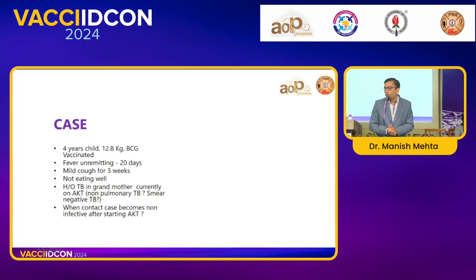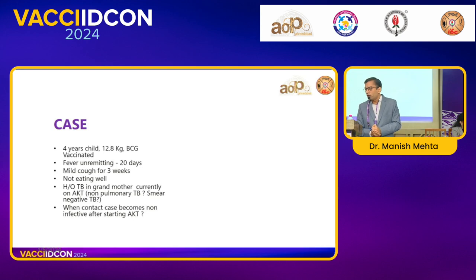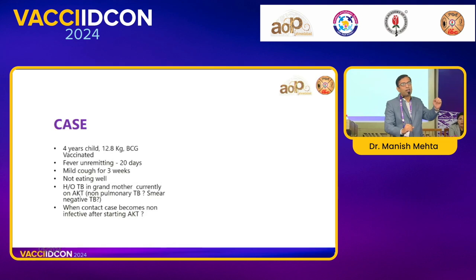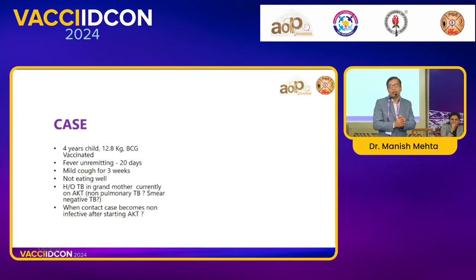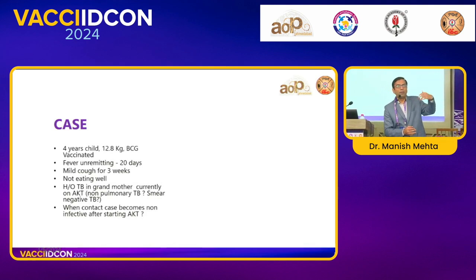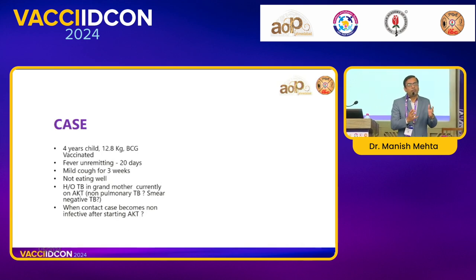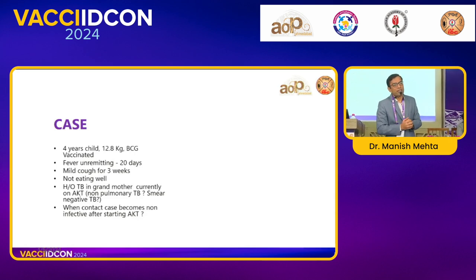Let's see a case: 4-year-old child, 12.8 kg, BCG vaccinated, unremitting fever for 20 days, mild cough for 3 weeks, not eating well, history of tuberculosis in grandmother who is currently on AKT for smear-negative tuberculosis. Here there is a classical history — fever, cough, history of contact. As discussed, contact with non-pulmonary TB still counts as a contact. When does this contact become non-infective? In drug-sensitive tuberculosis, it is 2 weeks. In MDR-TB, it may be 1.5 to 2 months.